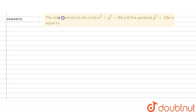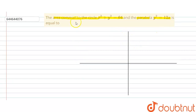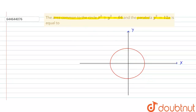Hello students, the problem is to find the area common to the circle x² + y² = 64 and the parabola y² = 12x. First we draw the diagram — this is the xy-axis, y-axis and x-axis. The given circle has radius 8 and center at the origin. The parabola is of the y² = 4ax type. The common region is the small area we are finding, let's call it the required area.